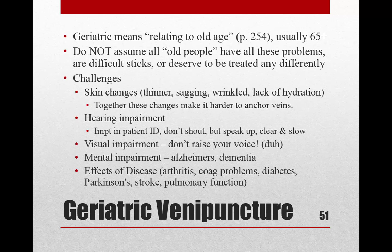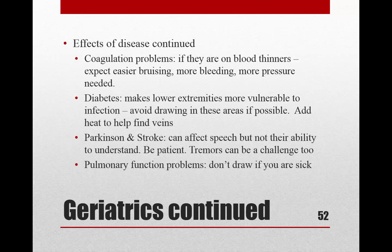Geriatric patients — generally 65 and older — have their own special challenges. Do not assume all older people have these problems or are difficult sticks; treat every patient as an individual. Generally in older patients you may find skin changes, hearing or visual impairments, and possible mental impairments due to disease. Blood thinners and coagulation problems may mean they bruise easier and bleed longer — hold more pressure. Diabetes can make extremities more vulnerable to infection, so you may need to add heat. Circulation may not be as good. Parkinson's and stroke can affect movement and speech, though they can usually still understand. Pulmonary function issues may also be present — read the relevant section in your book for more detail.